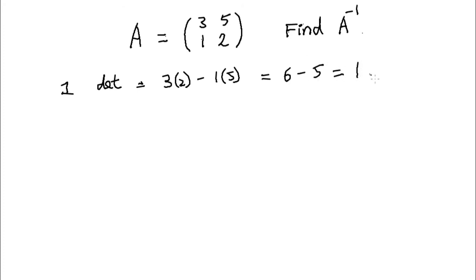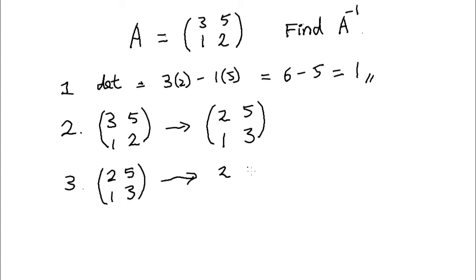Step 2, rearrange so 2 and 3 are in reverse position. So we get (2, 5; 1, 3). Step 3, sign change to (2, minus 5; minus 1, 3).